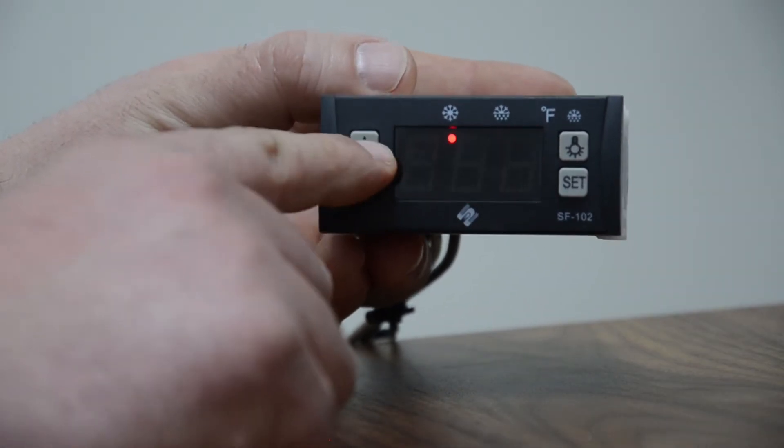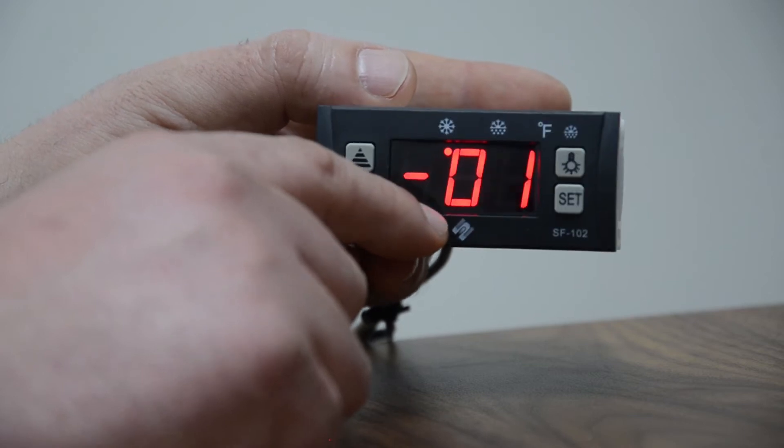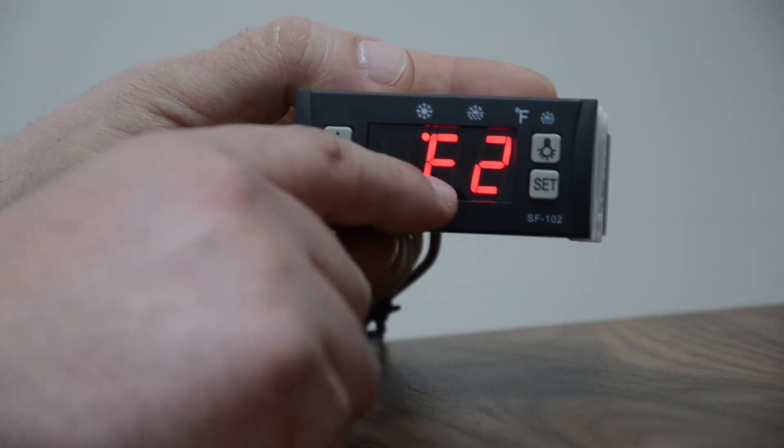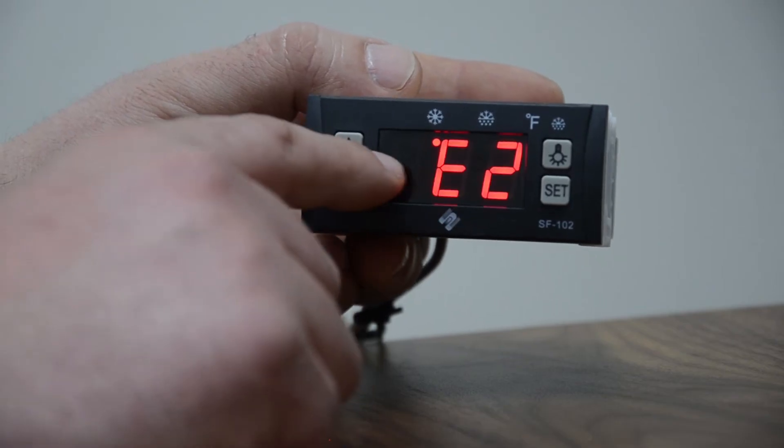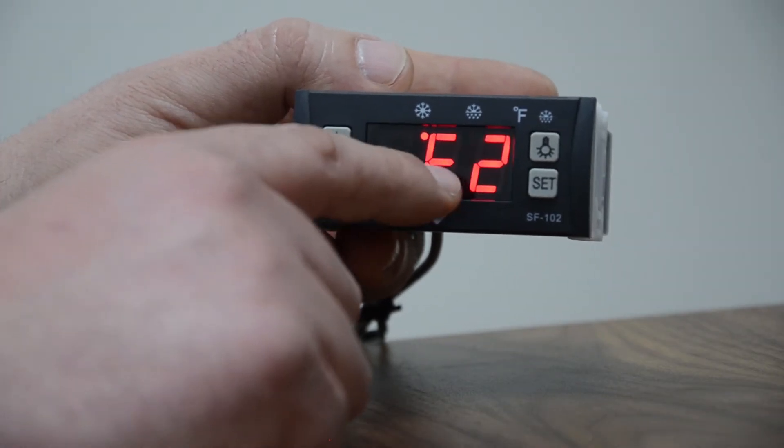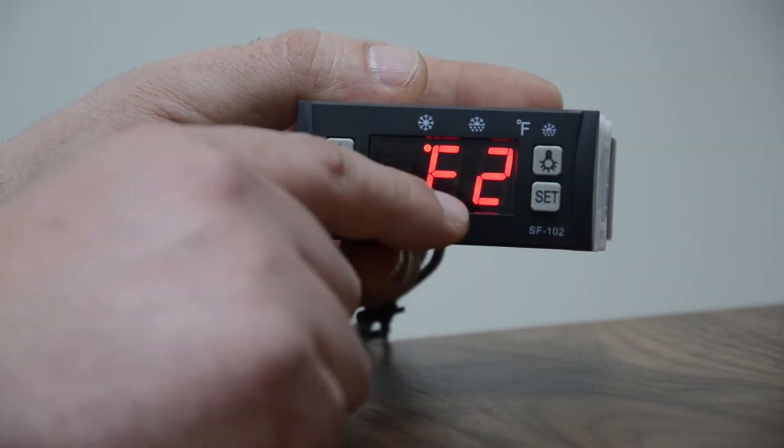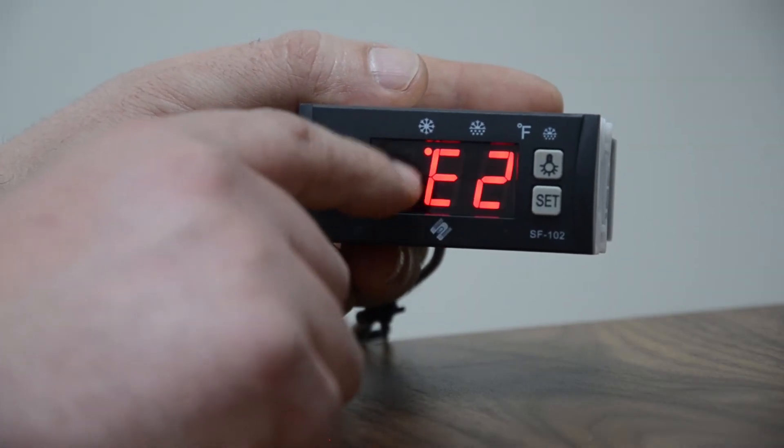If you increase it or decrease it for the lowest set point they want, depending on the products that are inside the fridge. E2 is the highest set point, the highest set point of what the fridge could reach for the customer that wants it, so it doesn't want it to go above eight degrees.